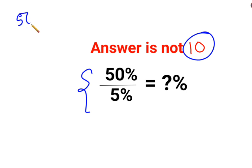See, 50% can be written in terms of fraction as 50 upon 100. Similarly, we have 50 upon 100 divided by 5 upon 100.